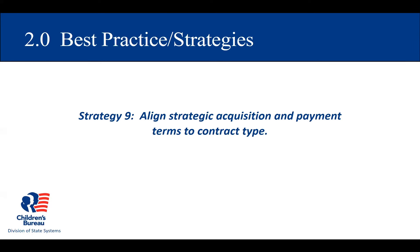Strategy nine: align strategic acquisition type and payment terms to the contract type. There are four things to say about this, stemming from what I'm seeing in the procurement documents. Strategic acquisition involves determining and articulating the contract type and the payment terms to attain best value.